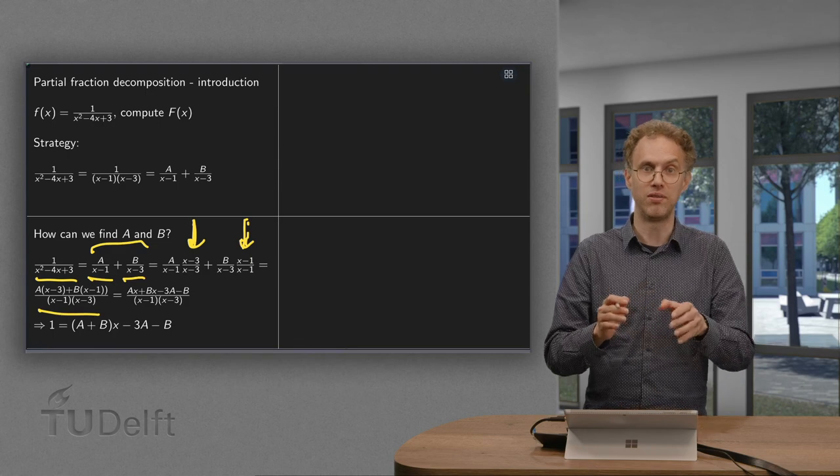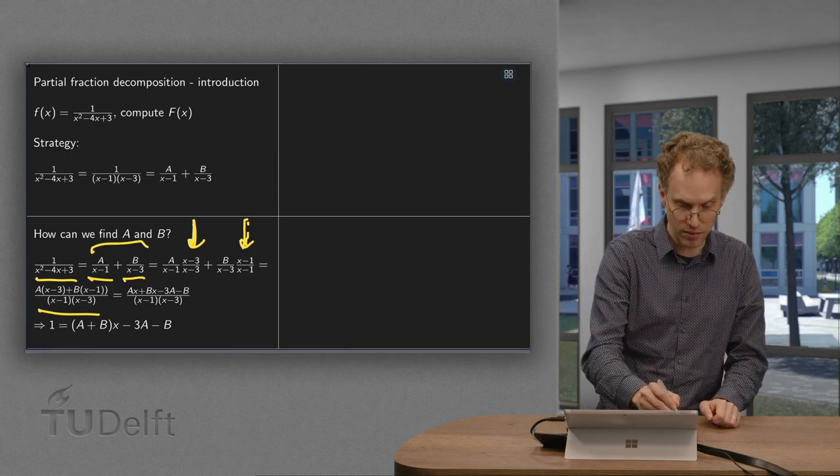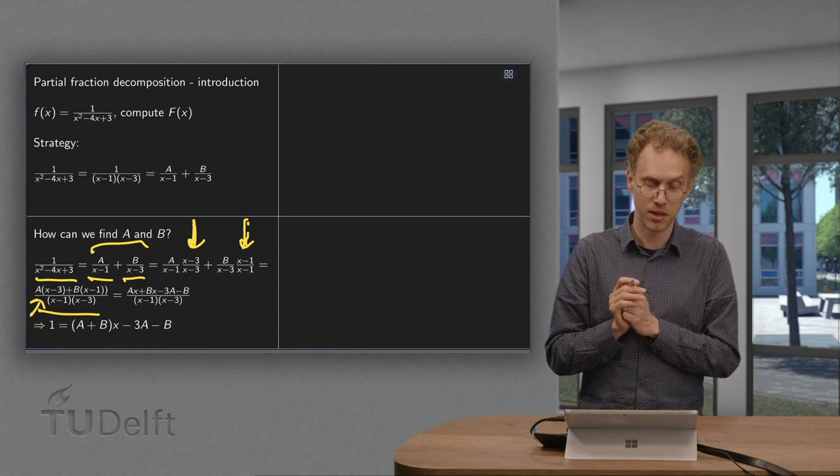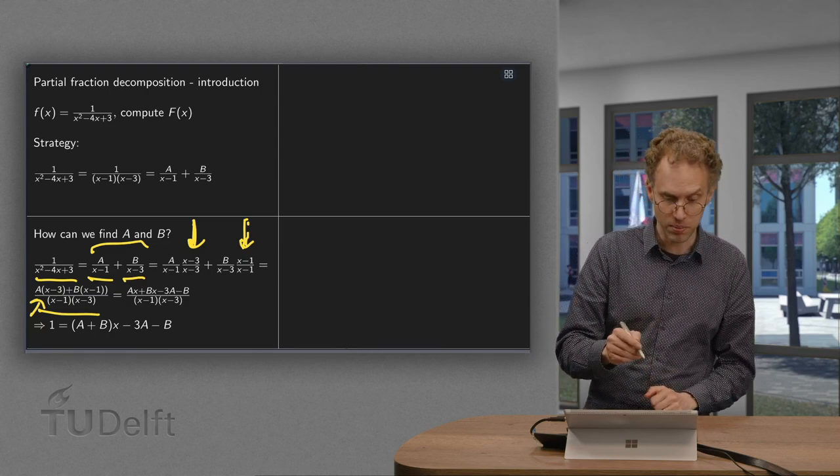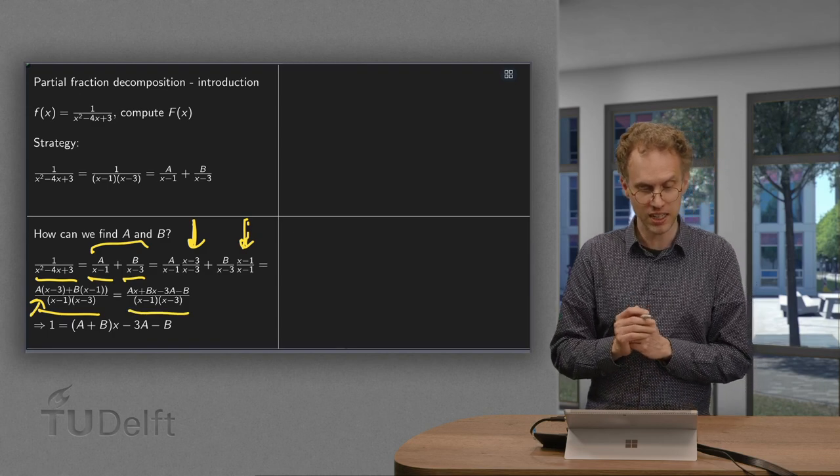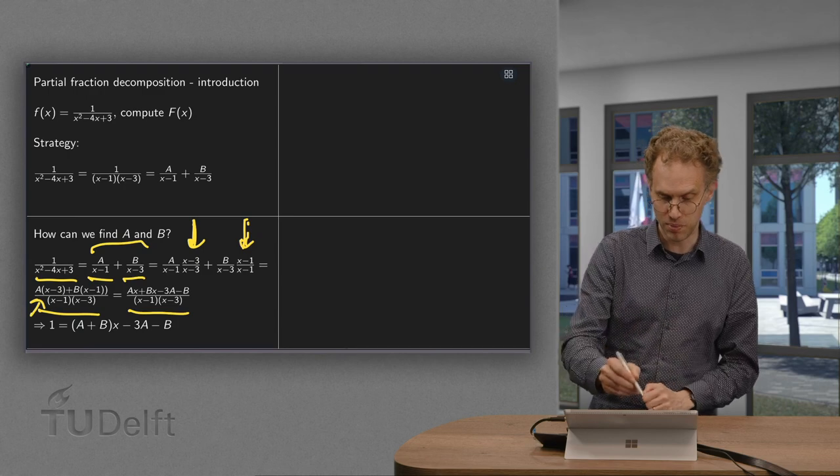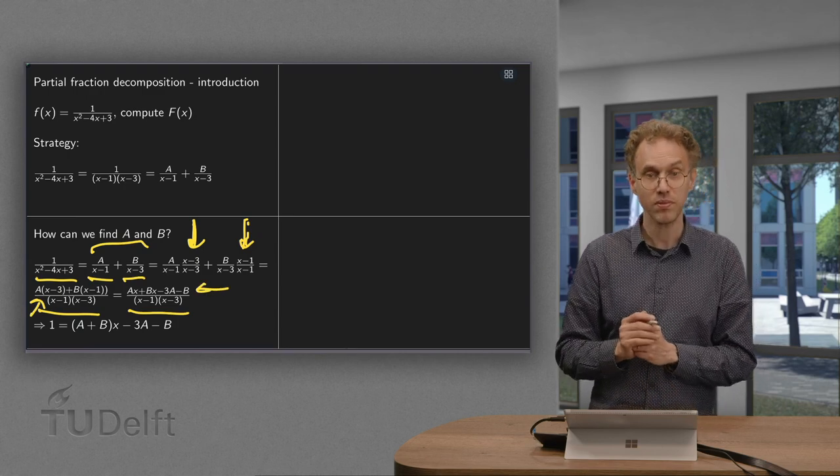Now the first term equals A times (x minus 3). And the second term equals B times (x minus 1). We work out the brackets, leaving the denominator as is. We have Ax minus 3A plus Bx minus B. That is our numerator.